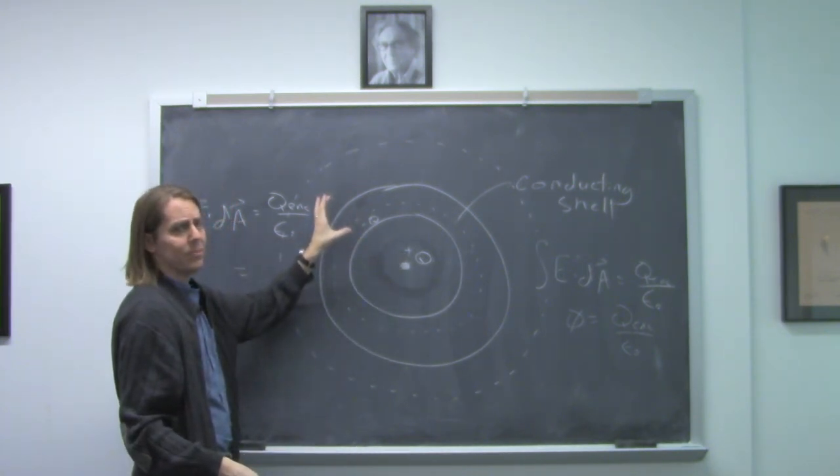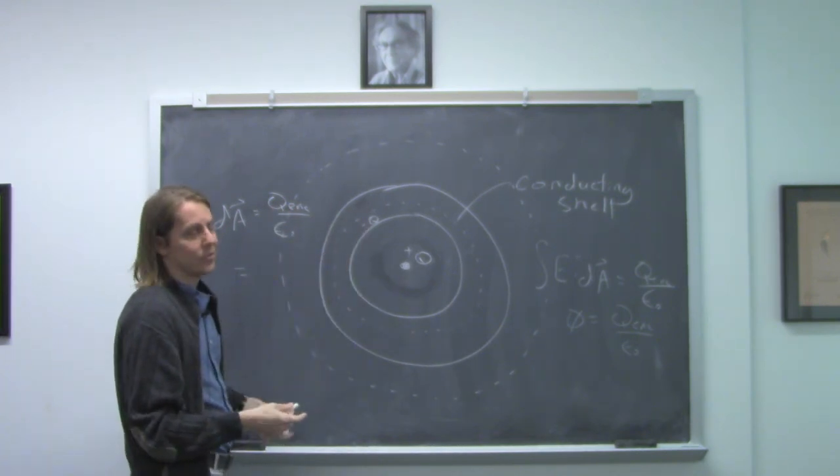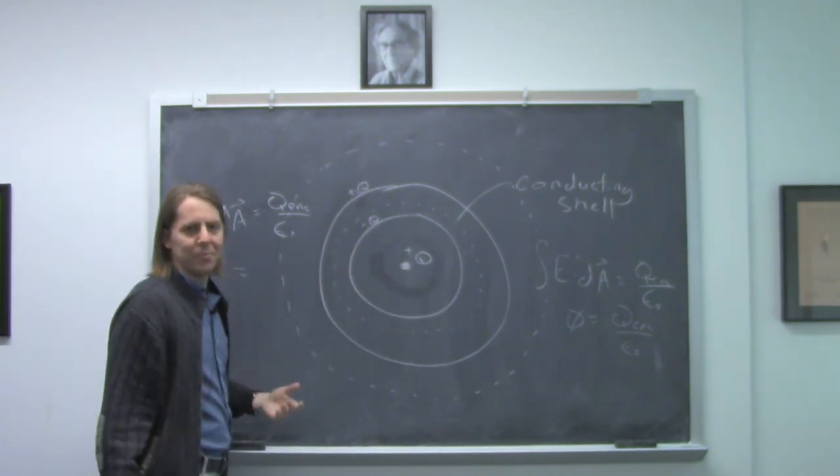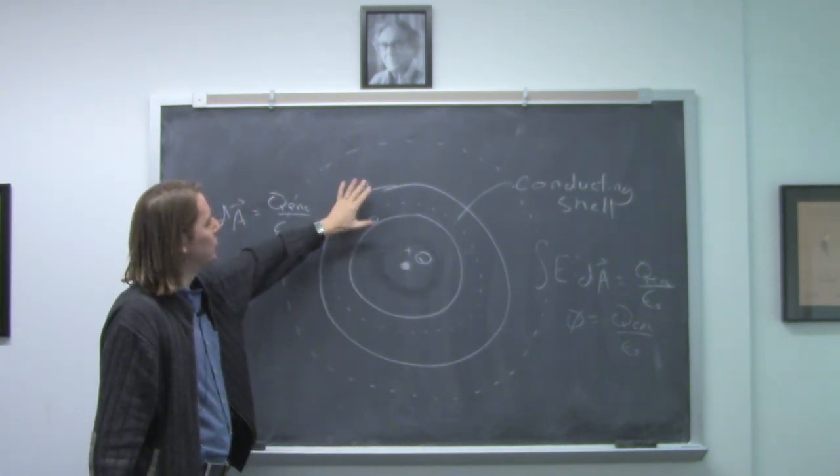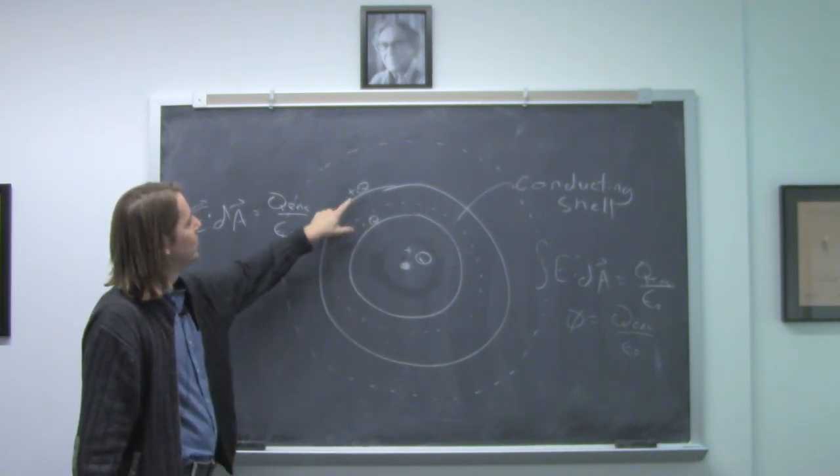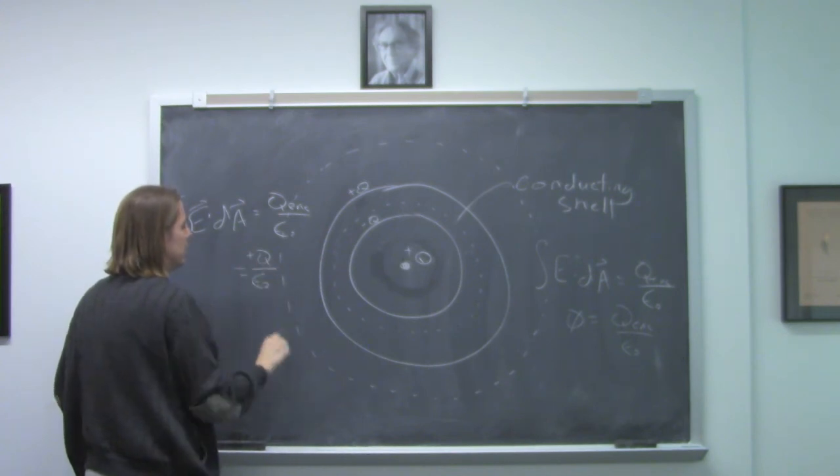But wait a minute. The conductor was neutral. It was just a neutral shell. If minus Q came to the inside surface, now the outer surface is covered with plus Q. So we can't use a neutral material to cancel out this charge. You could say this one cancels this one, but there's still a total charge of plus Q in there.